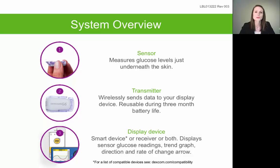Your Dexcom consists of three different components. Figure 1 is your sensor or sensor pod — it looks like a sticky band-aid piece with a very thin flexible sensor wire just below it. That sensor wire is inserted into the subcutaneous or fatty layer of your skin and it continuously measures your glucose. On top of the sensor pod is your transmitter, labeled in figure 2 — a small gray rectangular piece that fits snugly into the sensor pod and wirelessly transmits glucose information to your display device, labeled in figure 3. Your display device can either be the Dexcom receiver that came with your system or a compatible smart device of your choice.